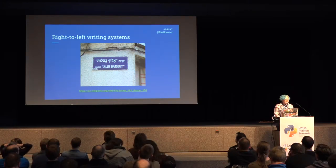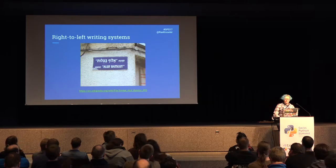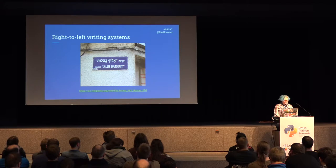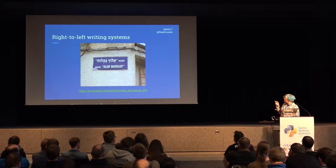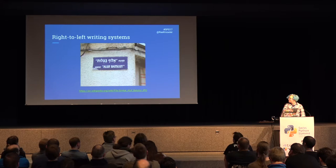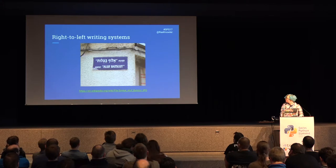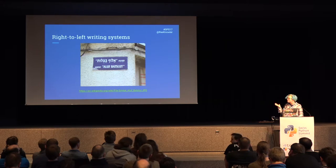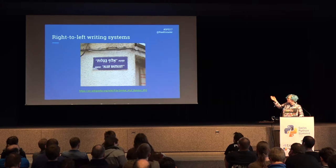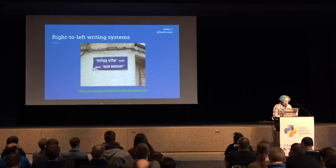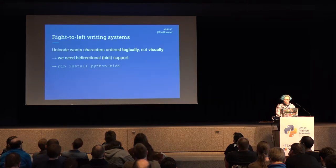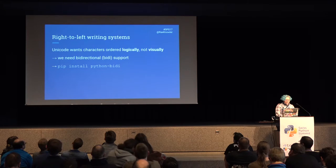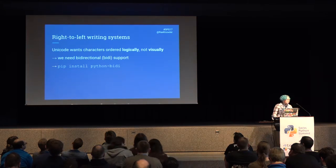Moving on — I noticed when putting this presentation together that we're more or less moving eastwards across the world. This is stop two on our tour: the Middle East. This is a picture of a street corner in Jerusalem, because we're going to talk about right-to-left writing systems, of which Hebrew is an obvious example. We have the Hebrew name and the transliterated name of this street, and you can see from the font sizes that one goes right to left, one goes left to right. That isn't a problem if you're just writing by hand, but unfortunately we have a wrinkle with Unicode.